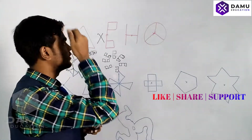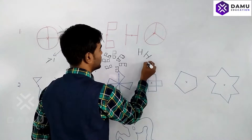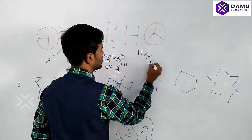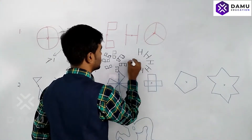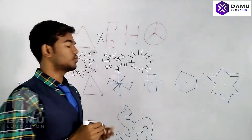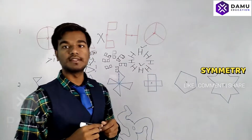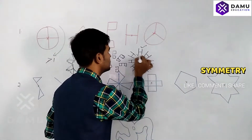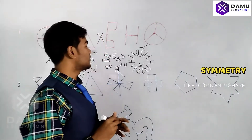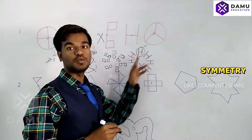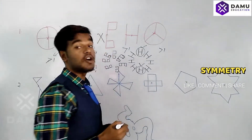Next, the letter H. If you rotate H, it will come like this — you can see it looks the same two times: once here and once here. So the order of rotation for H is two, which is more than one, meaning H has rotational symmetry.